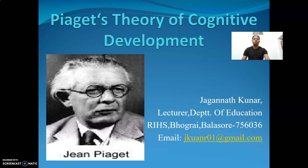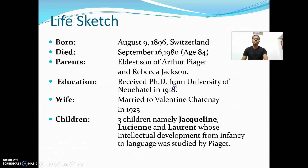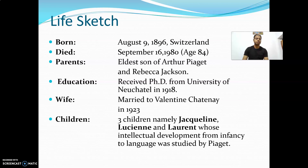Let us come to the topic: the development of cognitive structure and function. Regarding his life sketch, he was born in Switzerland, received his PhD from the University of Neuchâtel in 1918, and married Valentina Châtenay in 1923. He had three children named Jacqueline, Lucien, and Laurent. Piaget focused his experiments by taking these three children as his subjects.